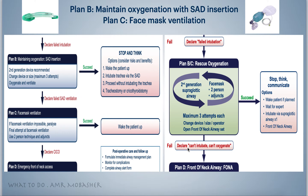If we fail both, we declare can't intubate, can't oxygenate and proceed to front of neck access. This is done like the vortex technique. The reason is that the ICU patient cannot tolerate waiting while you try laryngeal mask insertion three times separately, so you have one trial, then face mask ventilation to rescue oxygenation, then a second attempt, then face mask ventilation, then a third and final attempt, then face mask ventilation, then declare CICO and move to front of neck access.